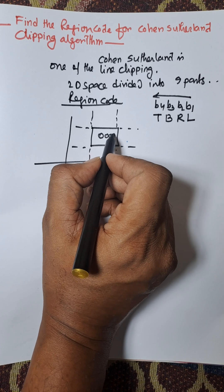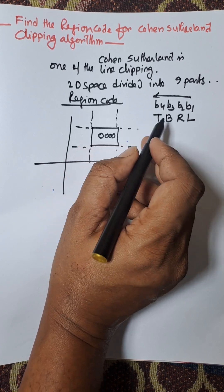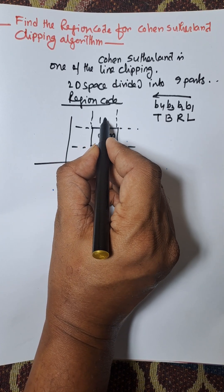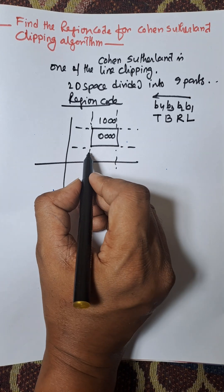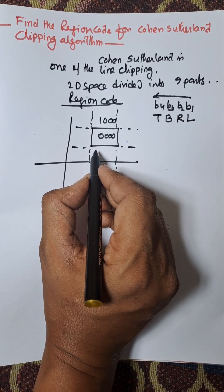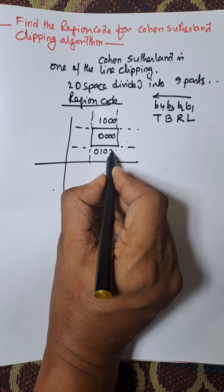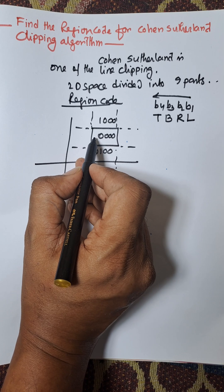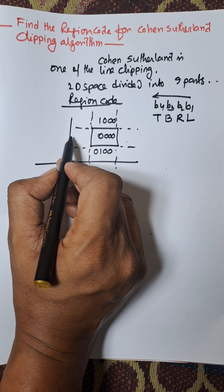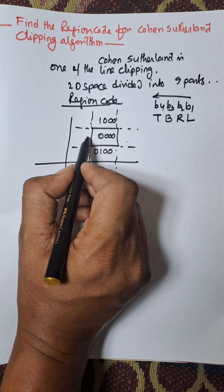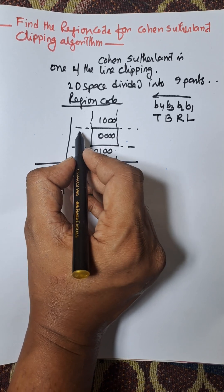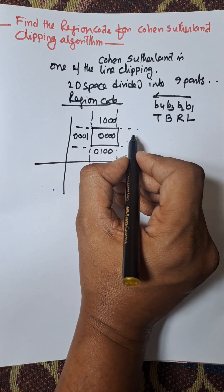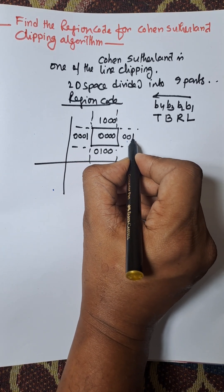This is the top of the region, so T is 1, 0, 0, 0. And this is the bottom of the region, that is 0, 1, 0, 0. This one is the left side of this region, and left means 0, 0, 0, 1. And this is the right side of this region, that is 0, 0, 1, 0.